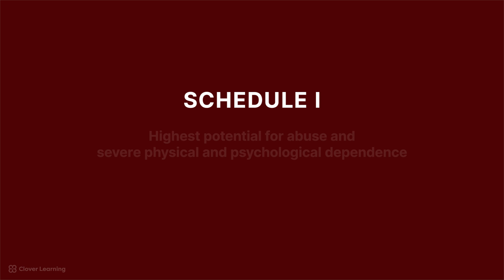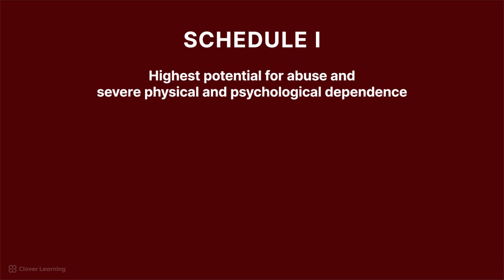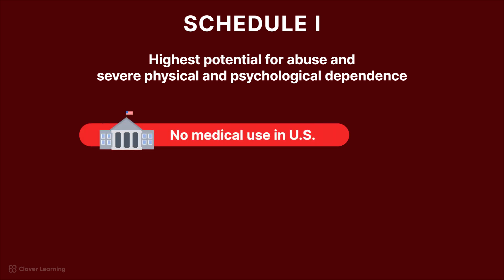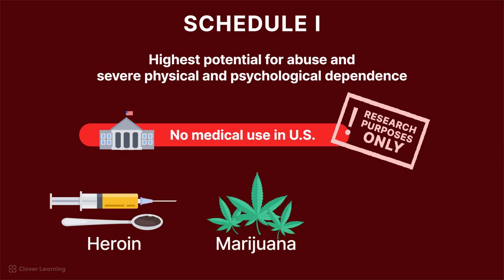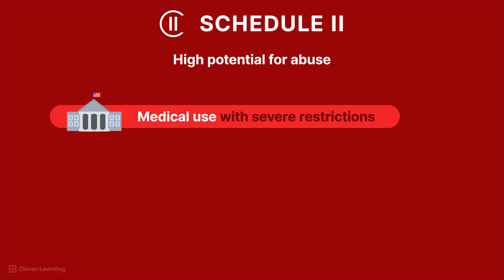Schedule I drugs have the highest potential for abuse and severe physical and psychological dependence. These drugs have no accepted medical use in the United States and are only to be used for research purposes. Common examples include heroin, marijuana, and LSD.